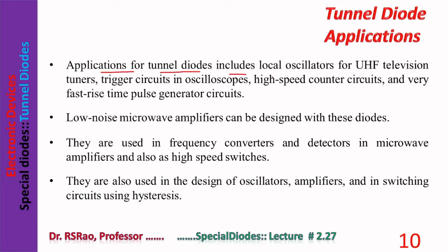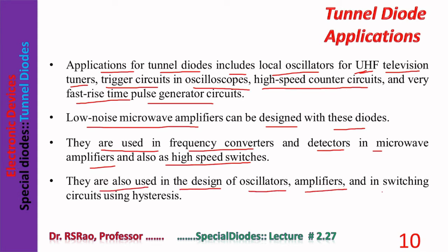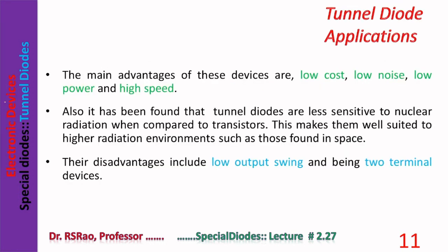Applications of tunnel diodes include local oscillators for UHF (Ultra High Frequency) band, UHF television tuners, trigger circuits in oscilloscopes, high-speed counter circuits, and very fast rise-time pulse generator circuits. Low-noise microwave amplifiers can be designed with these diodes. They are also used in frequency converters and detectors, in microwave amplifiers, as high-speed switches, and in oscillators and switching circuits using hysteresis.